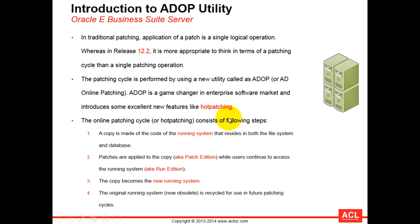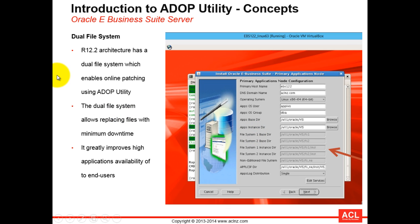While understanding hot patching, we come across a couple of new concepts: something called an edition, and a clone of the running system also called the patch edition. These two editions run simultaneously together, so they are copies of each other. The entire file system gets copied into the patch edition, which is referred to as the dual file system of the application server. The dual file system is a new feature introduced in release 12.2 that enables online patching using the ADOP utility.